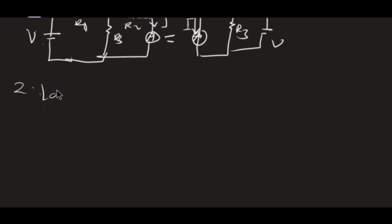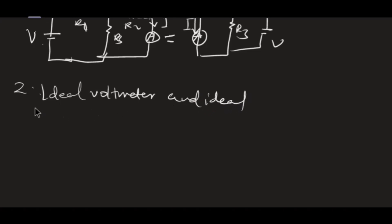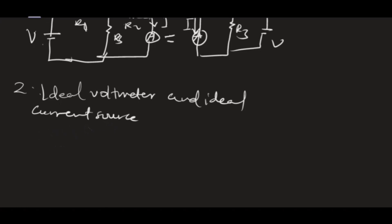The second way of stating the reciprocity theorem deals with an ideal voltmeter and an ideal current source — as opposed to the first way which dealt with an ideal ammeter and voltage source. What this says is: an ideal voltmeter and ideal current source, when connected across two different branches of a network, can be interchanged without changing the reading of the voltmeter.